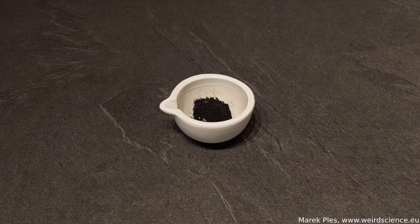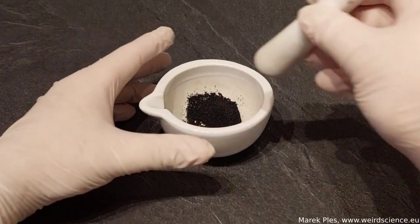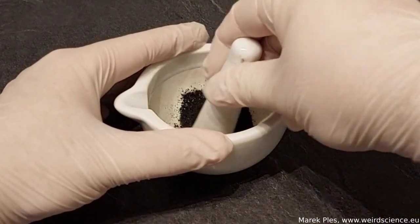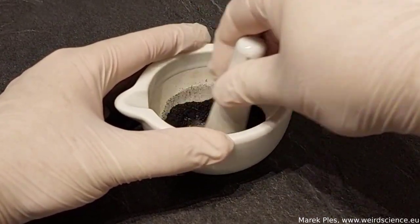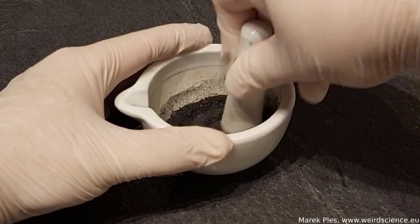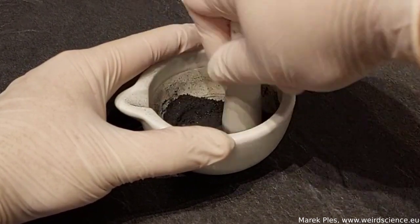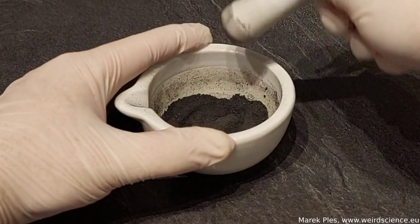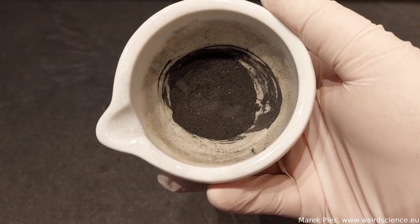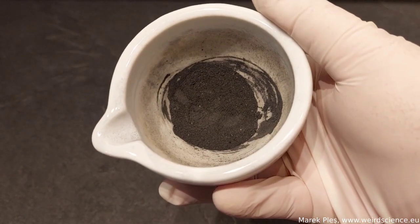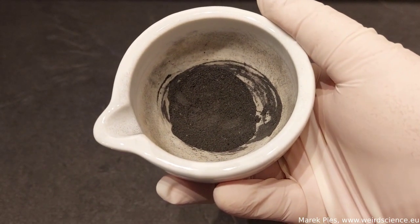All the ingredients must then be finely powdered and mixed very well. After a moment of grinding, we obtain a dark grey mixture ready for making senko hanabi.